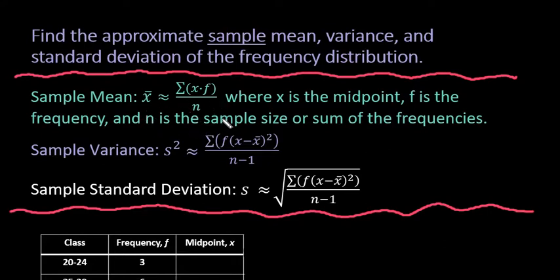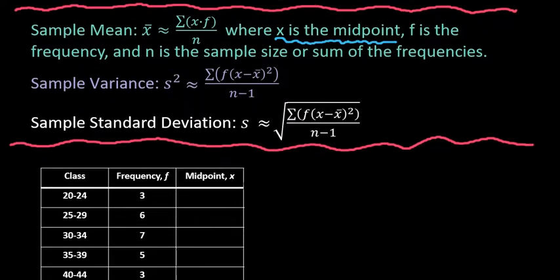So just a recap of what your calculator is doing, what the formula is doing, to find the sample mean you're taking each of your individual values times the frequency. In this case, we're going to let x represent the midpoint of the class of the frequency distribution. f is going to be the frequency, and n is the sum of the frequencies or the sample size. So if you were doing hand calculations, you would have to create a column for x times f and then add it all up. But like I said, your calculator does it all for you.